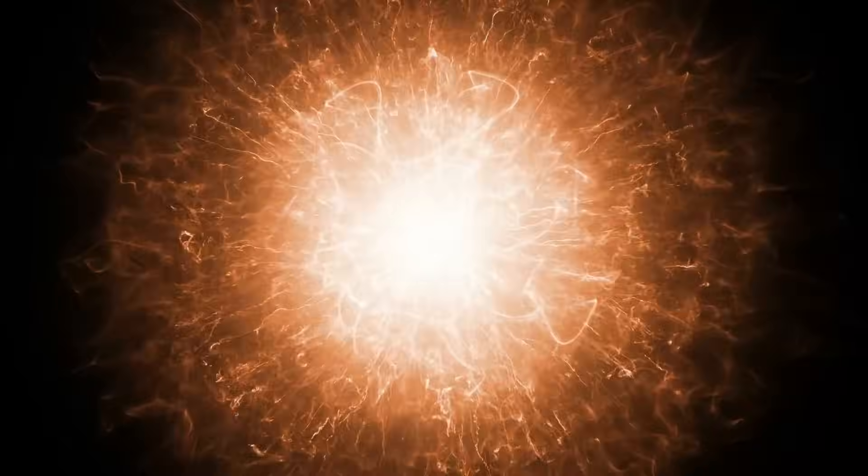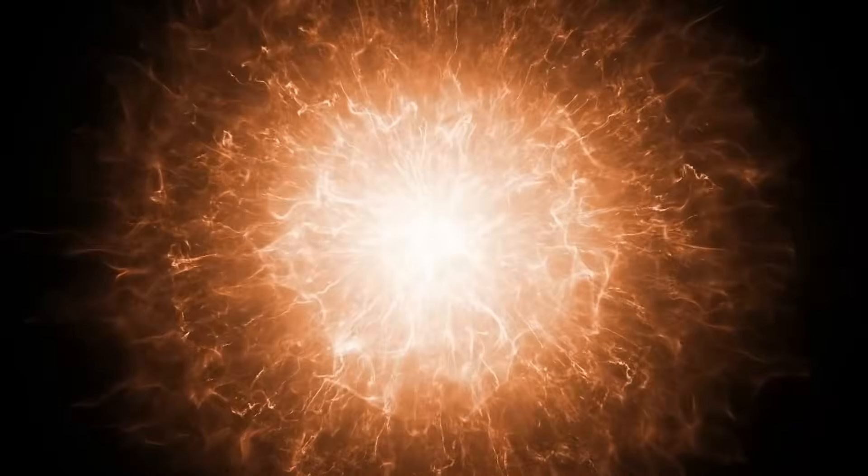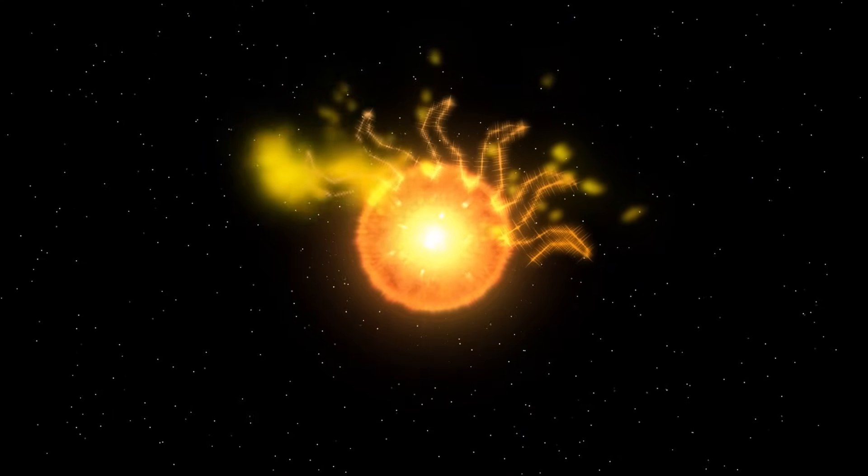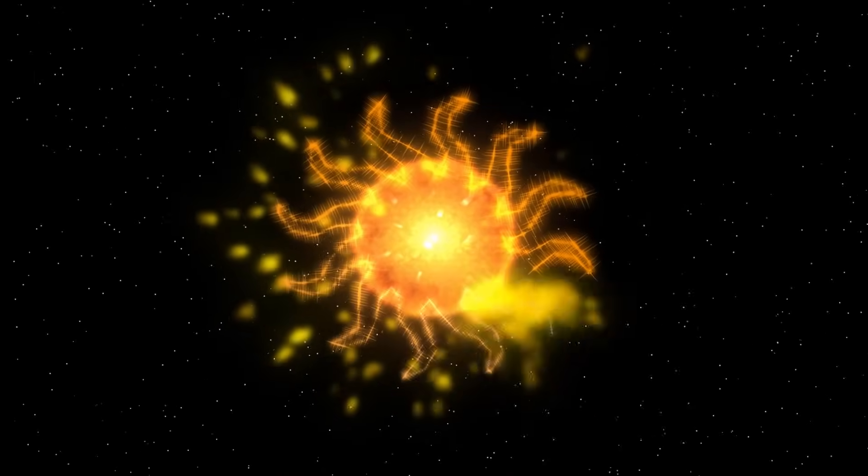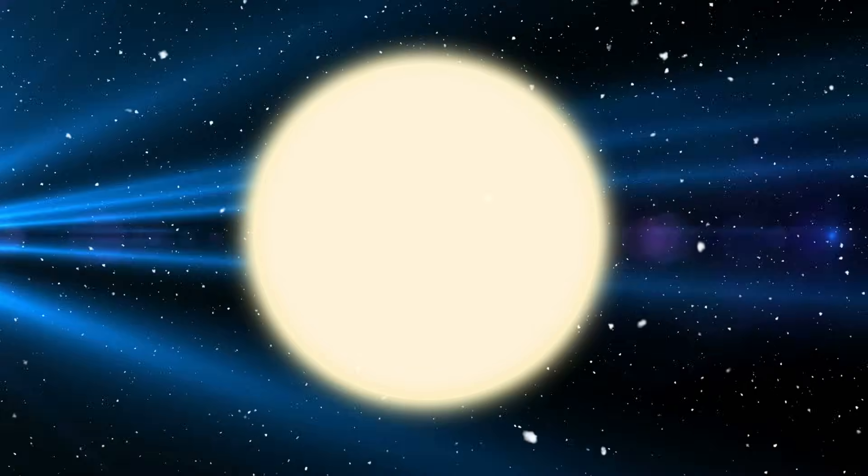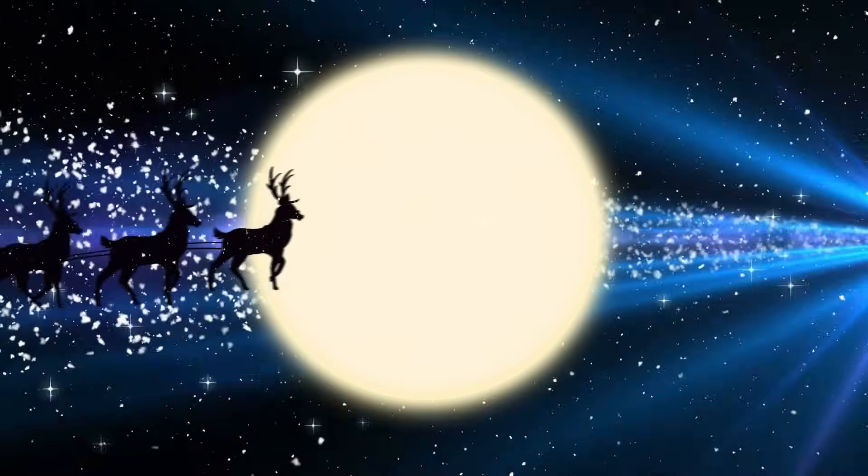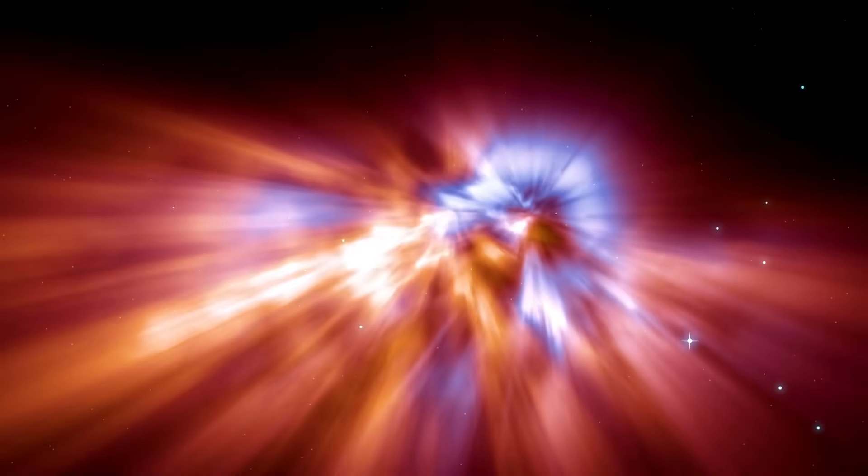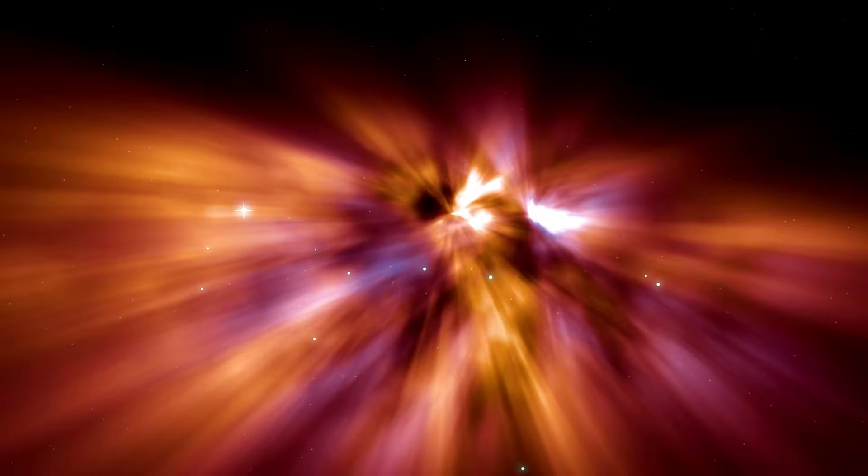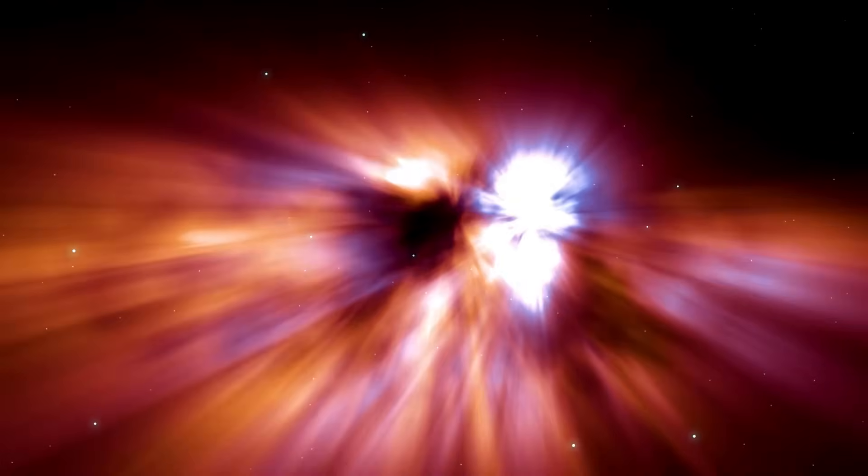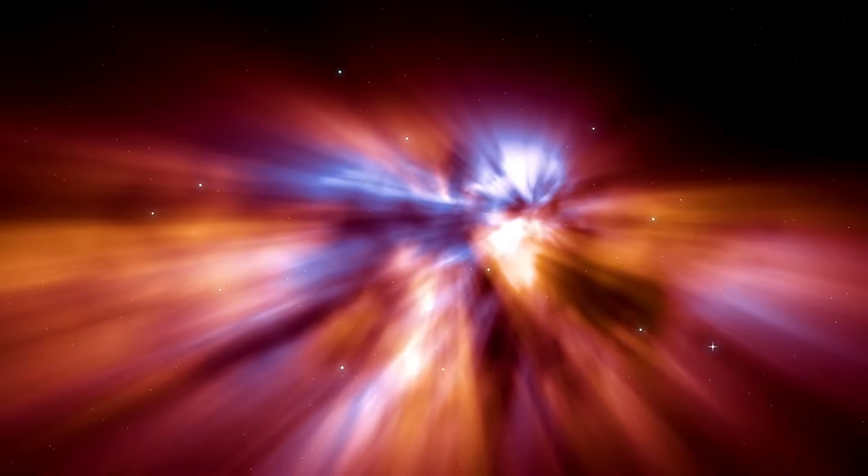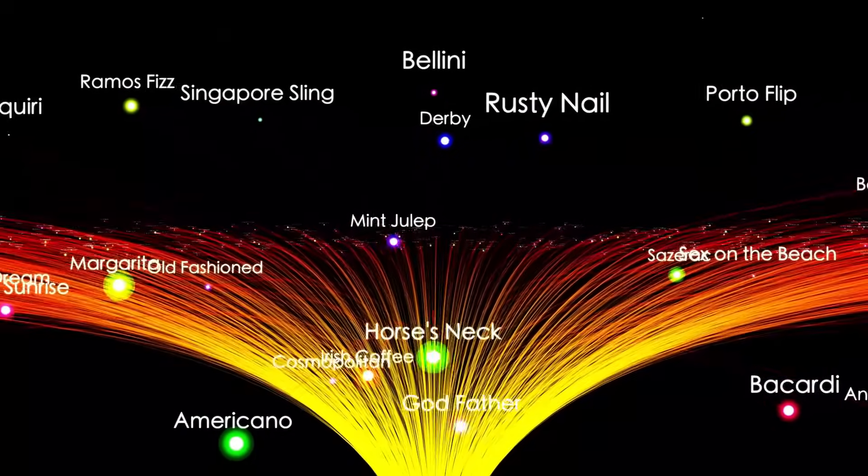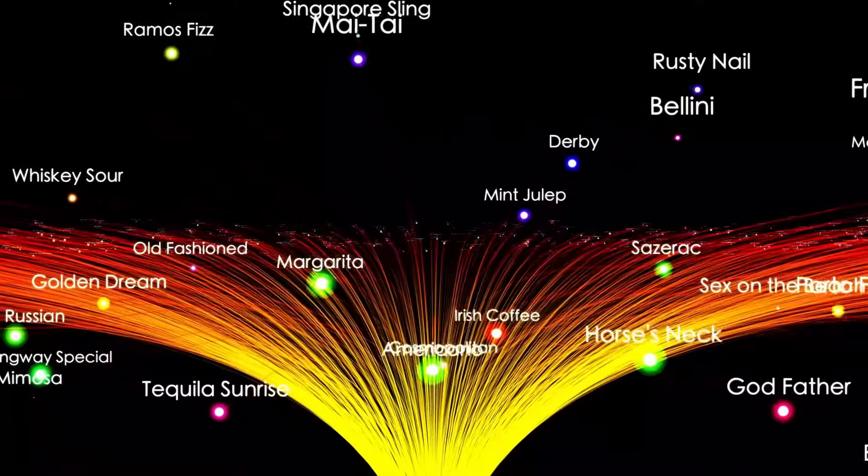The light we see from Betelgeuse doesn't show us its current state. It shows us how the star looked about 725 years ago, because that's how long its light takes to reach Earth. This means any changes we observe now actually happened centuries ago. If Betelgeuse were to explode as a supernova, we wouldn't know until long after the event had already occurred. This delay, caused by the immense distance, presents a major challenge for astronomers who must interpret ancient signals to understand a star's present and predict its future.